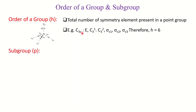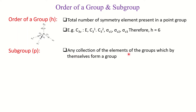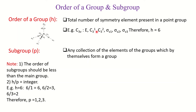Now, how to find out the subgroup — represented by small p. A subgroup is any collection of elements from the group which by themselves form a group. Two key conditions: first, the order of the subgroup must be less than the order of the main group; second, h divided by p (order of group divided by order of subgroup) must give an integer value.